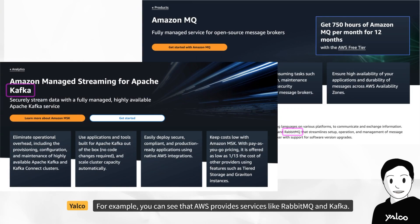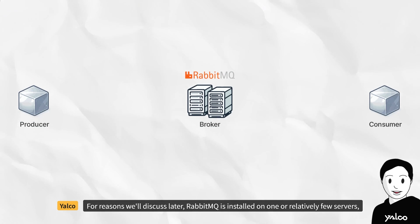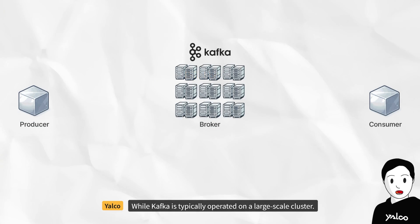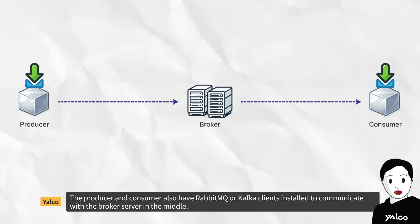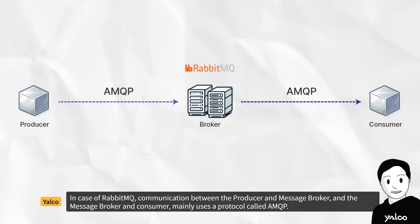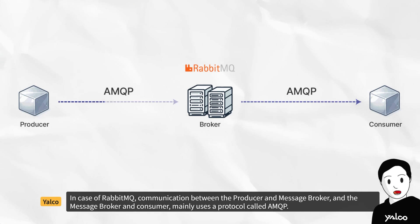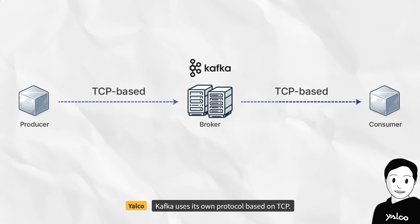For example, AWS provides services like RabbitMQ and Kafka. For reasons we'll discuss later, RabbitMQ is installed on one or relatively few servers, while Kafka is typically operated on a large-scale cluster. The producer and consumer also have RabbitMQ or Kafka clients installed to communicate with the broker server. In the case of RabbitMQ, communication between the producer and message broker mainly uses a protocol called AMQP, while Kafka uses its own protocol based on TCP.